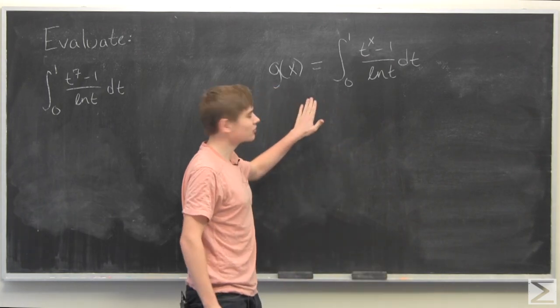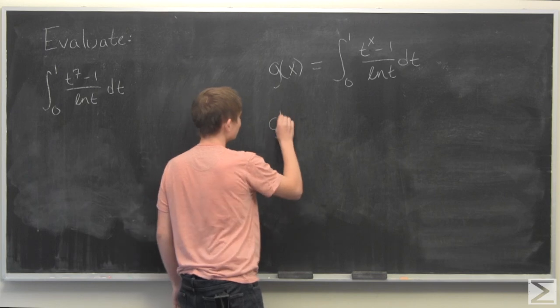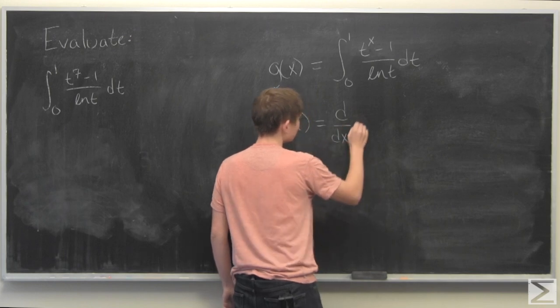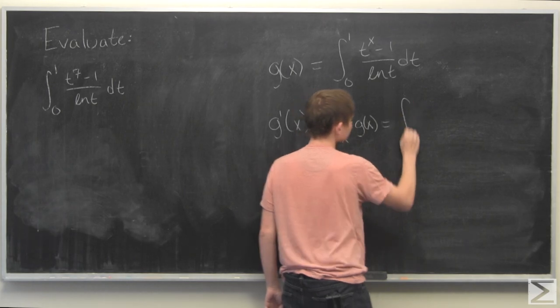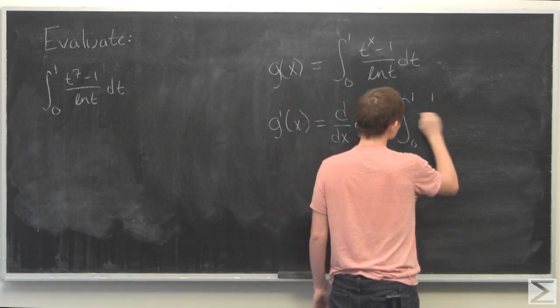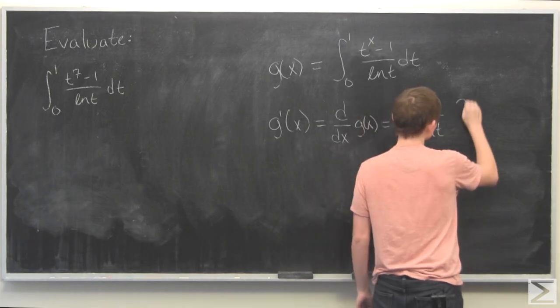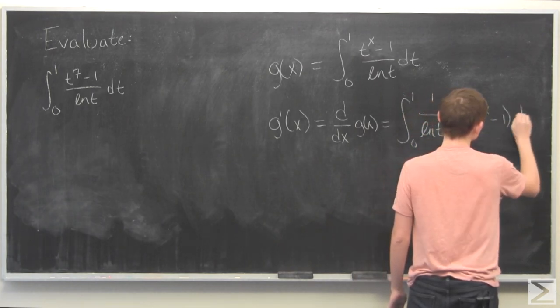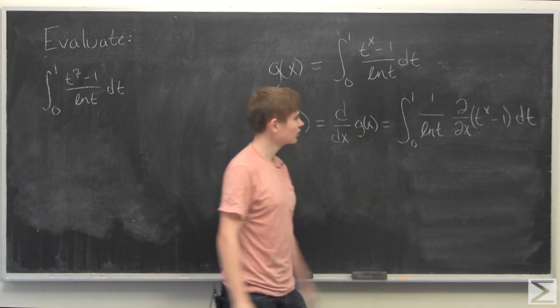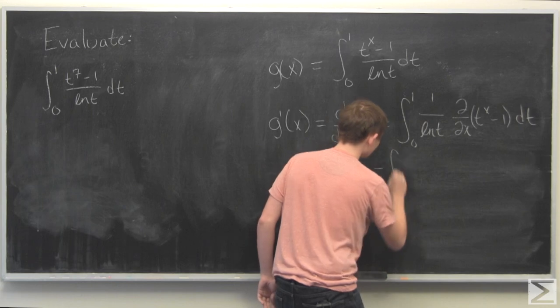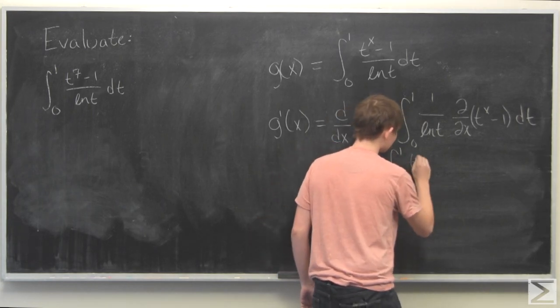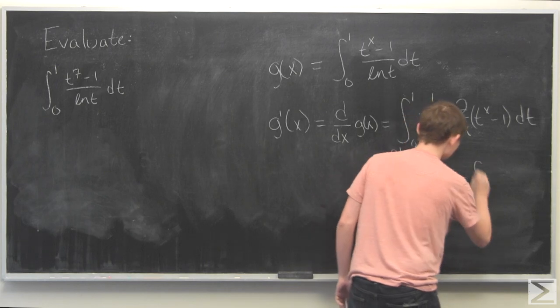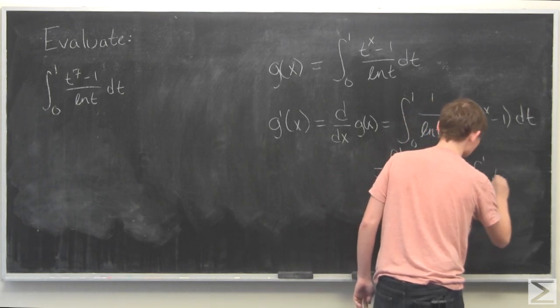Now what we're going to do is take the derivative of this. So we have g prime of x which is the derivative with respect to x. When we take that derivative, we find that we get t to the x ln of t over ln of t, which just becomes t to the x.